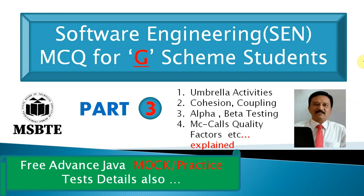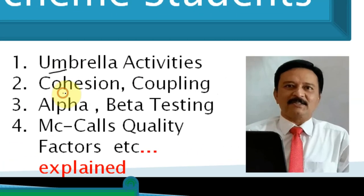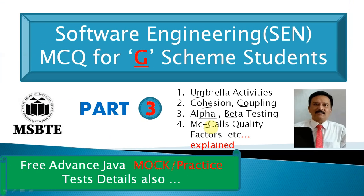We will talk about some MCQ questions for the G-scheme and I-scheme students. Topics covered include umbrella activities, cohesion, coupling, alpha testing, beta testing, and McCall's quality factors.